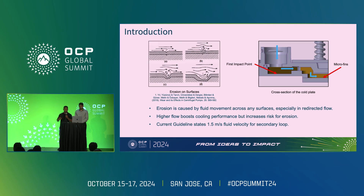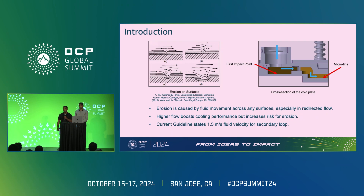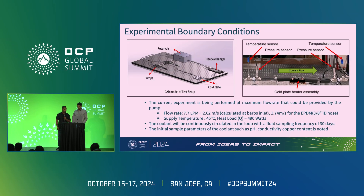Just to give a brief background on erosion and our interest in erosion: as some of you probably know, there is a current ASHRAE guidance on 1.5 meters per second fluid velocity. The hope is that if we can go to a slightly higher fluid velocity, we can improve cooling performance, but the risks associated with that would be things like erosion. At a basic level, erosion is caused by fluid movement across any surfaces, and this is obviously a concern in areas like the cold plate, but also on the secondary piping. Lo-Chan is going to go through some of the details on the study and also some of the results.